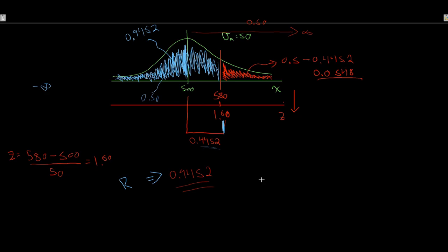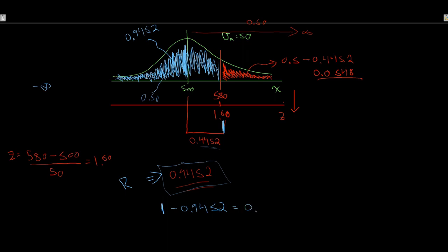That's important to recognize. If we want our final value of 0.0548, we take the entire distribution area of 1, subtract the blue cumulative area of 0.9452, and the red tail left over is 0.0548.